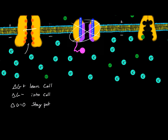So how do we actually calculate these values? The Gibbs free energy for the potassium concentration gradient is equal to R, the ideal gas constant, times the temperature, times the natural log of the concentration of potassium on the inside of the cell over the concentration of potassium on the outside of the cell. For a living cell, this is a positive value.